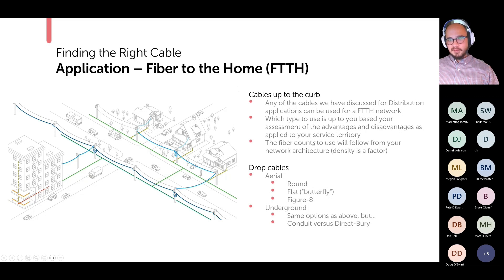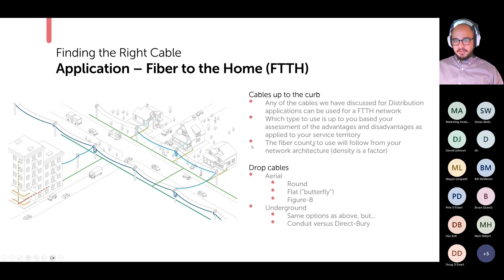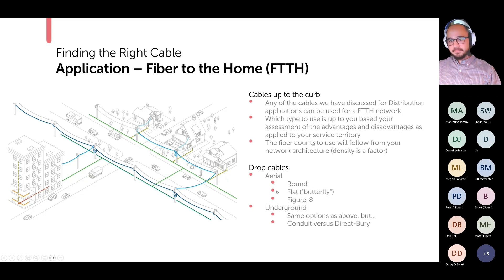For fiber to the home, basically any cable discussed for distribution can be used. Which type you use depends on the advantages and disadvantages as applied to your service territory. Fiber counts will follow logically from your own network architecture, and density is typically a big factor. Common cables seen in fiber to the home are drop cables. For aerial or underground drops, you have the round type, the flat butterfly type, figure eight, and for underground the same options as seen in previous slides.